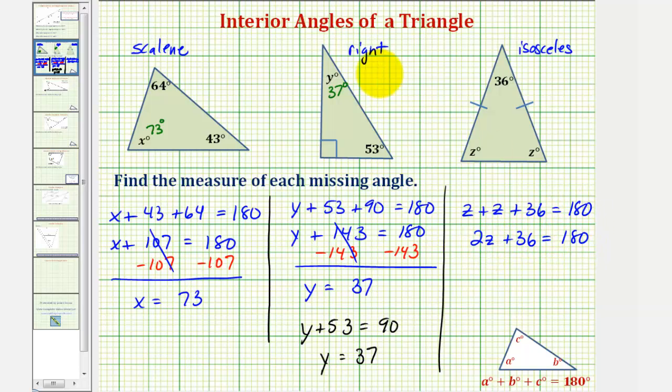So here we have a two-step equation to solve. We'd first subtract thirty-six on both sides. This would give us two z equals one hundred forty-four. And now to solve for z, we divide both sides by two.